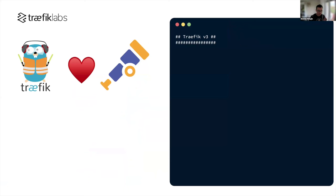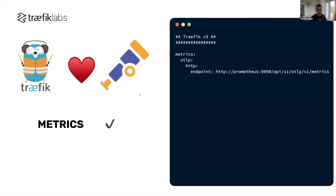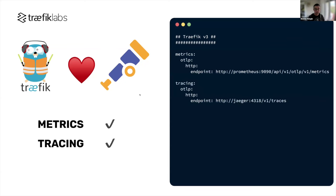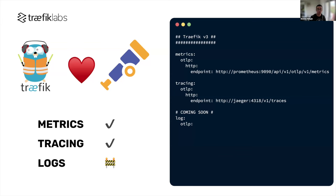At Traefik Labs, observability has always been very important. In Traefik v2 we brought OpenTracing implementation, so it was natural to bring OpenTelemetry support in Traefik v3. We brought metrics and tracing support, but not logs — because the logs specification for OpenTelemetry is very recent, released end of last year, and the Go SDK implementation is still in progress. As soon as the implementation is ready, we will bring it into Traefik.